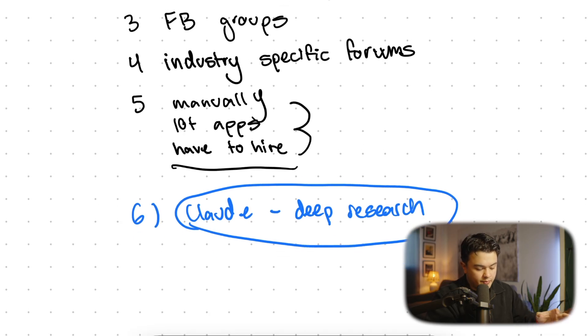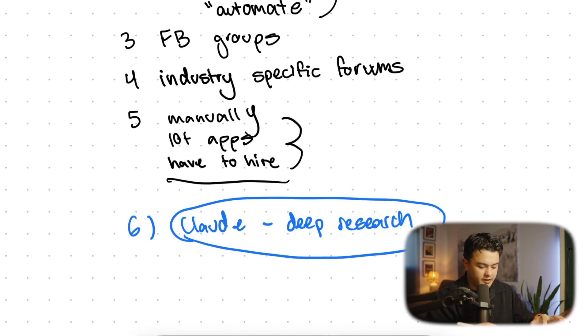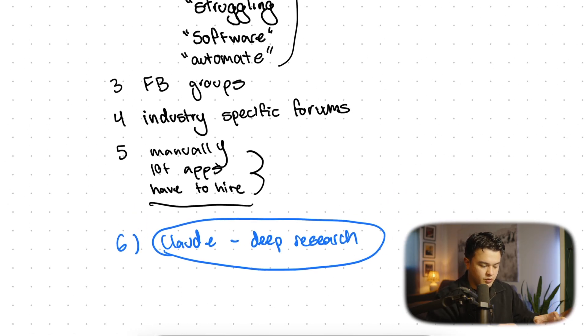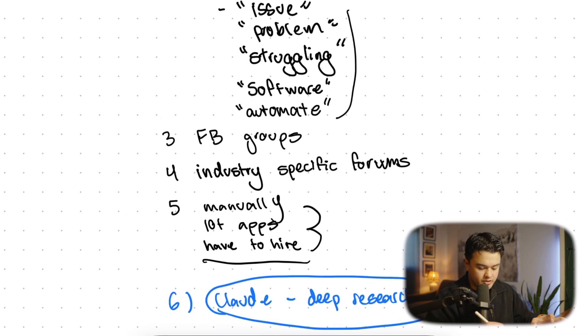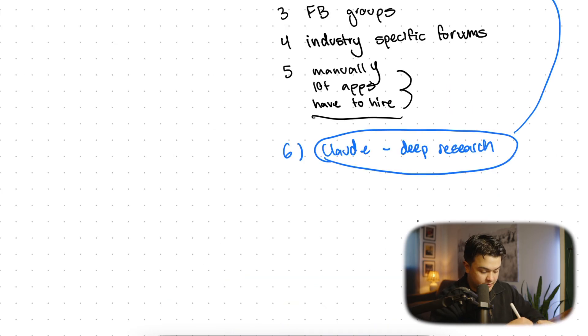You can have Claude do deeper research for you and tell it to scrape Reddit, niche specific forums, Facebook, whatever data source it can to find what your industry struggles with. This is a really great bonus to do on top of this. I do recommend doing this manually first because if you do this manually, you're just going to be more invested and have a better understanding of your industry and their problems. Step number two is validate.